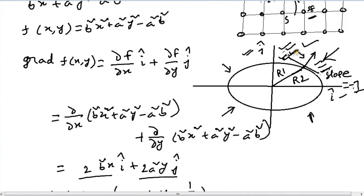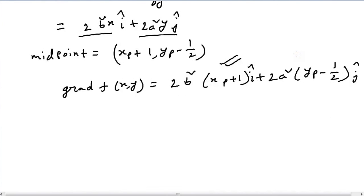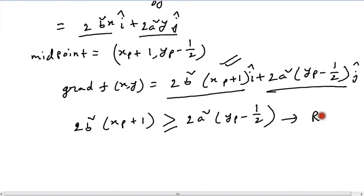Just like in the circle drawing algorithm, we say that the value of y is greater than the value of x in that particular octant. So we can compare between these two components and we can say that when 2b²(xp + 1) ≥ 2a²(yp - 1/2), then we've crossed into region 2.